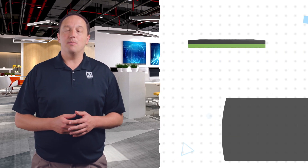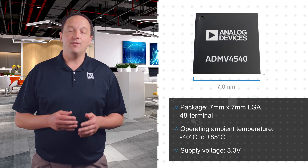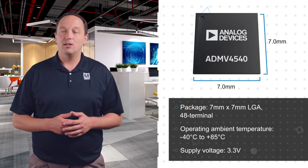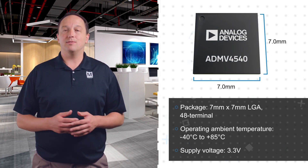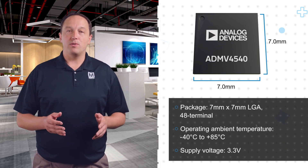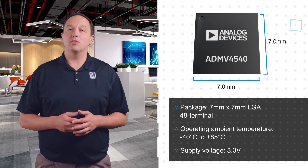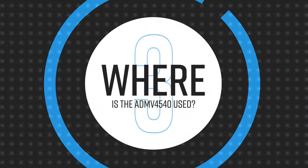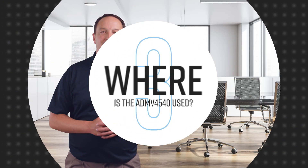In a typical satellite LNB and tuner, the ADMV4540 is available in a 7x7 millimeter LGA package and can be used from negative 40 to positive 85 degrees Celsius. It operates from a 3.3 volt supply and has a total power dissipation under 3.2 watts.